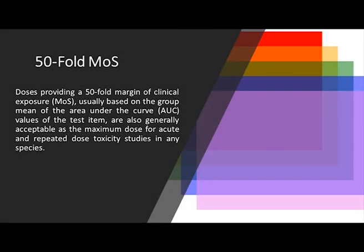Doses providing a 50-fold margin of clinical exposure, usually based on the group mean of the area under the curve (AUC) values of the test item, are also generally acceptable as the maximum dose for acute and repeated dose toxicity studies in any species.